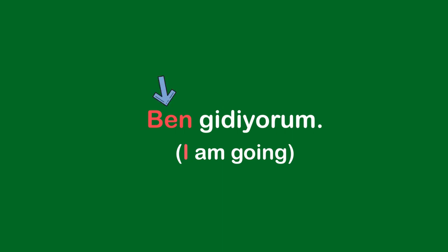In Turkish, you don't need to use subjects in a sentence because we have personal suffixes that we attach to the verb roots, and these suffixes indicate the subject. For example, 'Ben gidiyorum' means I'm going. 'Ben' means I, but we don't need to use it because in 'gidiyorum' there is a personal suffix — 'um' — that indicates the subject. So 'gidiyorum' by itself means I'm going.